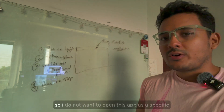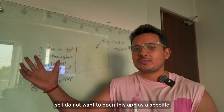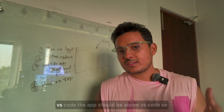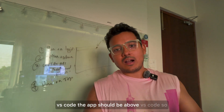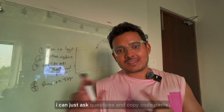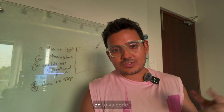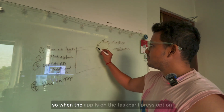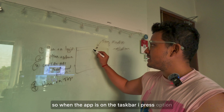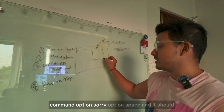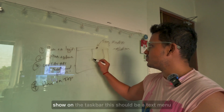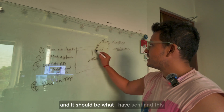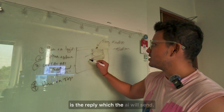The fourth requirement is it should always run on top. I don't want to search for the app window — if I'm typing in VS Code, the app should appear above VS Code so I can ask questions and copy code back. So: a basic app sitting in the taskbar, triggered by option+space, showing a text window with what I've sent and the AI's reply.